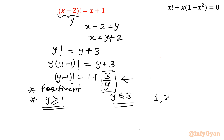So the candidates for y satisfying both conditions (y ≥ 1 and y ≤ 3) are y equal to 1, 2, and 3. We will verify y equal to 1 and y equal to 3.